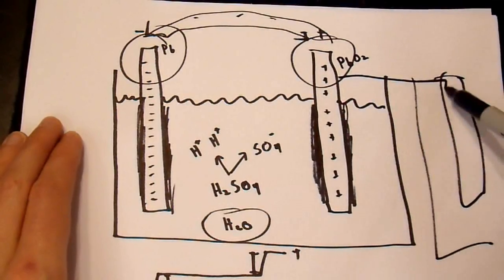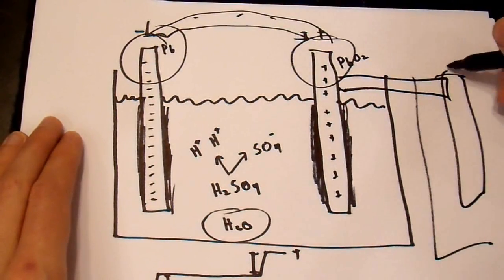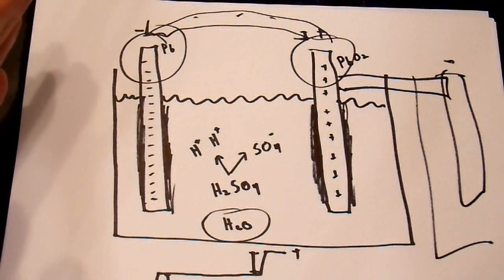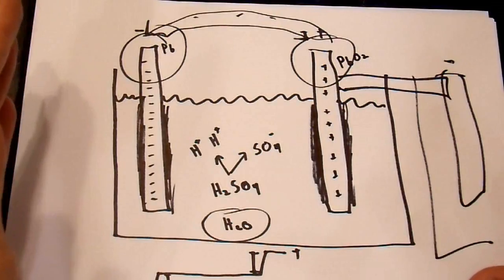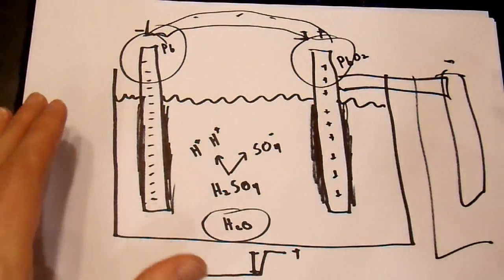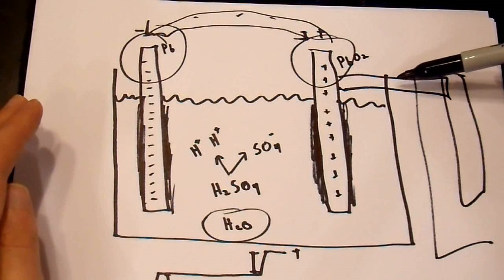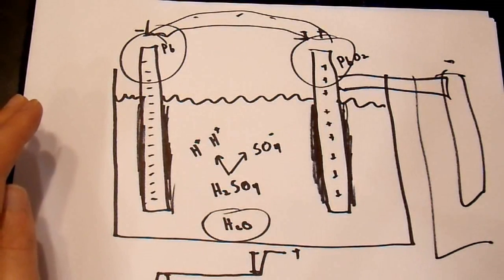And, internally, these two are then strapped together. This is a negative, that's a positive. And, you make a big battery. That's why it's called a battery, because there's six cells in a 12-volt battery. This is just a single wet cell. It's debatable whether you can call a single cell a battery or not. Not part of this discussion.